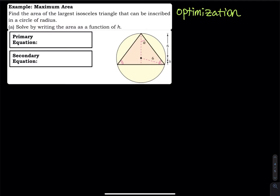Optimization problem. This problem has a lot of work, although the problem looks very simple. Let's read the problem: find the area of the largest isosceles triangle that can be inscribed in a circle of radius. I want you to solve by writing the area as a function of H.